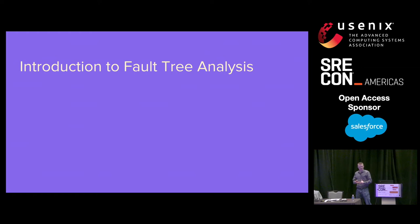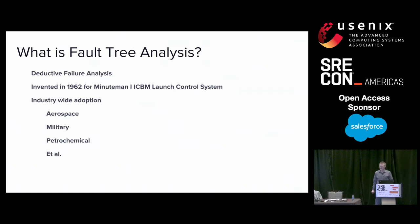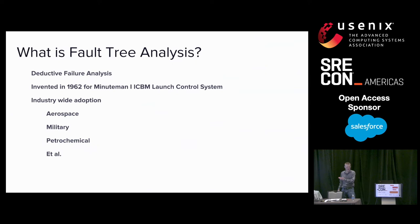So let's now run through a tutorial of fault tree analysis. Fault tree analysis is deductive failure analysis, and it was invented at Boeing in 1962. Boeing engineers at the time were designing launch control systems for ICBMs. If you want to talk about high stakes usage, this is it. If your launch control system fails, not only will you potentially friendly fire on yourself, but you could lose an entire war.